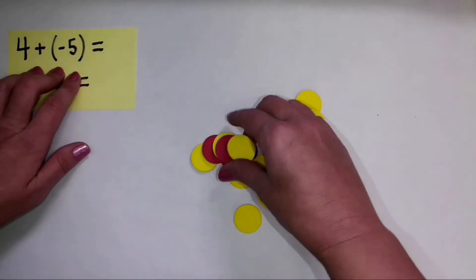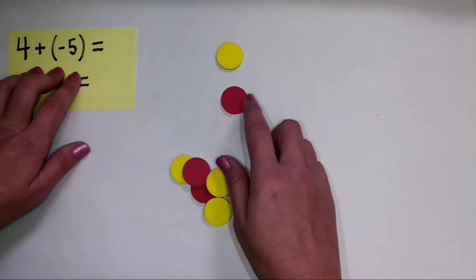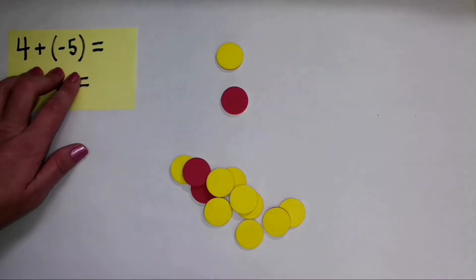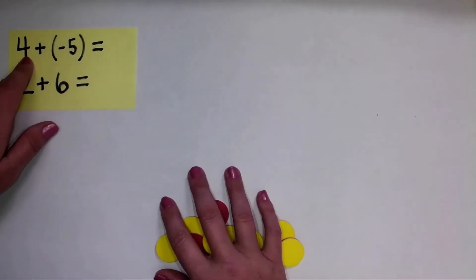Now when I use the two color counters, the yellow side is going to be used to represent positive integers, and the red side is going to be used to represent negative integers. So I'm going to move my counters down here, and then I'm going to set up this problem.